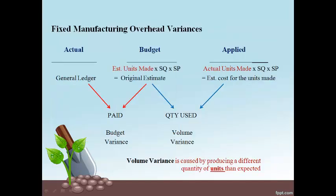The calculation of the variance for fixed manufacturing overhead is different than for variable product costs. Variable product costs must account for the fact that when quantity changes, total cost is supposed to change. Fixed costs do not change because quantity changes. The left side does not require a calculation — actual cost is stated in the general ledger, and the budget cost is the original estimate used for allocating fixed overhead. The left variance represents the difference in actual cost and what was expected to be incurred for the period.